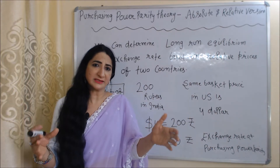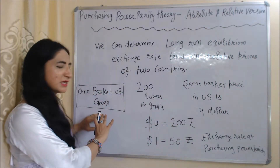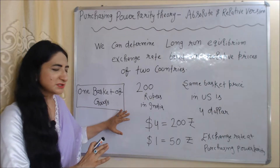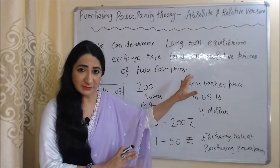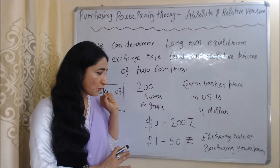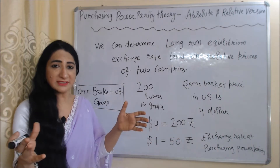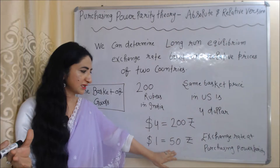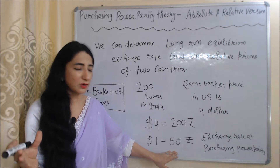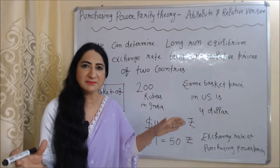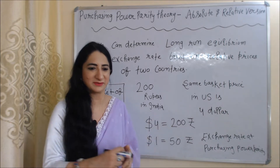With the help of prices we can easily establish exchange rate. For example, suppose we have one basket of goods and the price of this basket in India is 200 rupees, and the same quality basket price in the US is 4 dollars. So we can say that 4 dollars is equal to 200 rupees, which means 1 dollar is equal to 50 rupees. This exchange rate determined based on prices is called the exchange rate at Purchasing Power Parity.